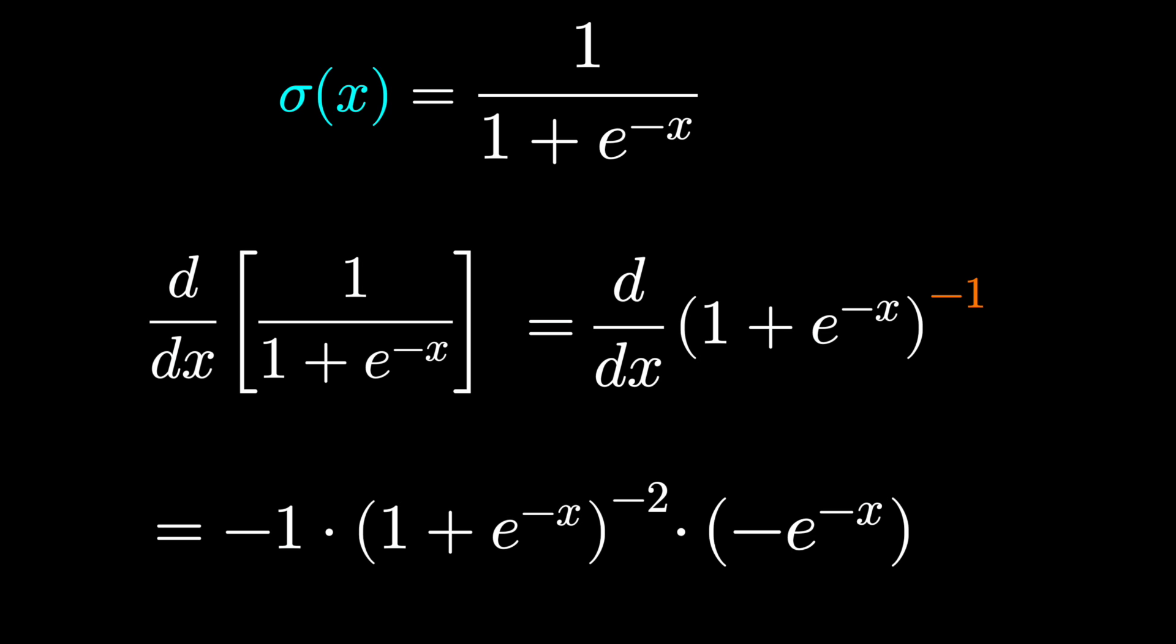The derivative of e to the minus x is minus e to the minus x. Go ahead and cancel these negatives, and rewrite this again using properties of exponents.